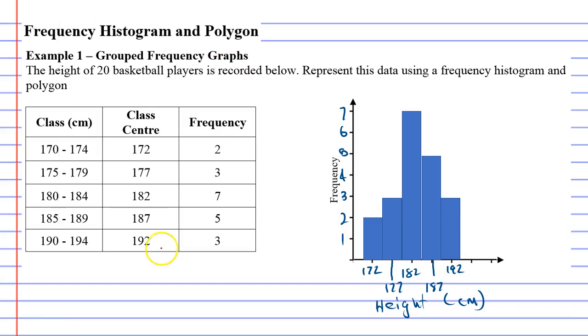It's important to actually start by drawing dots. And we'll do this one in red. Instead of drawing bars, you draw dots above it. So 172 has a frequency of 2. 172, frequency 2. 177, frequency 3. 182, frequency 7. Notice the dot is directly above that little dash there. Next one and next one.